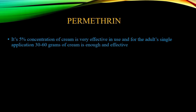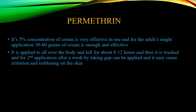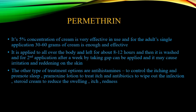Permethrin 5% cream is very effective; a single adult application of 30 to 60 grams is sufficient. It is applied all over the body and left for 8 to 12 hours, then washed off. A second application is done after one week. Common side effects are skin irritation and redness. Antihistamines are given to control itching and promote sleep. Pramoxine lotion is also used to treat itch, antibiotics to wipe out infection, and steroid creams to reduce swelling and redness.